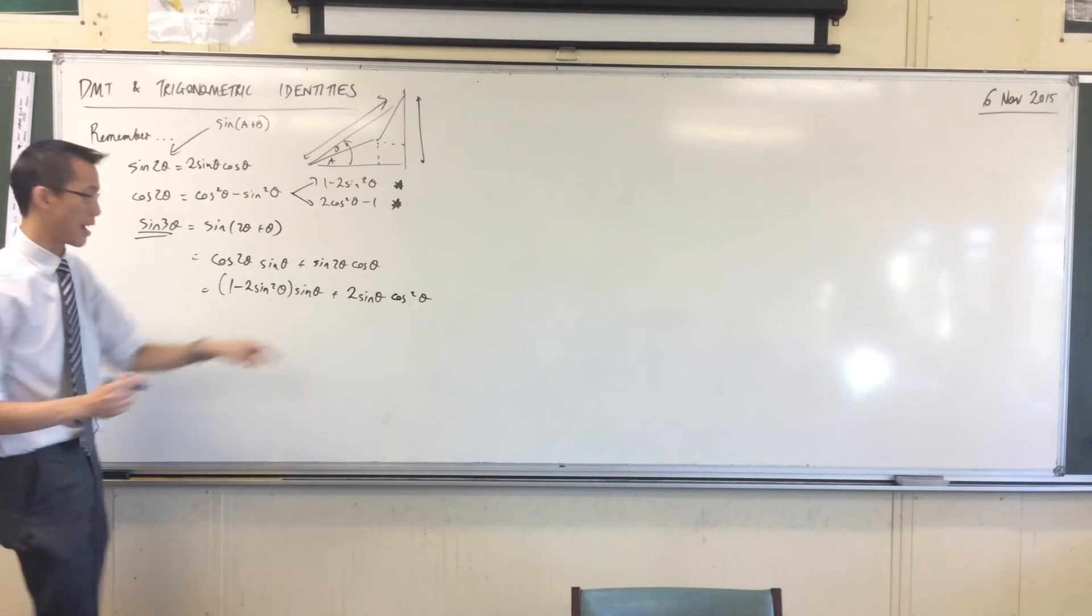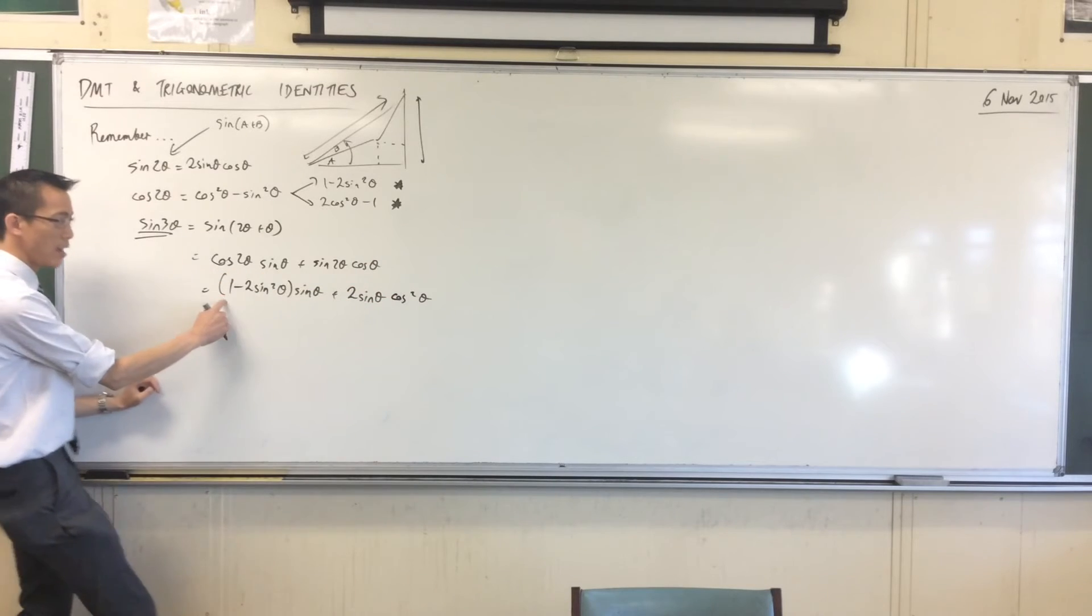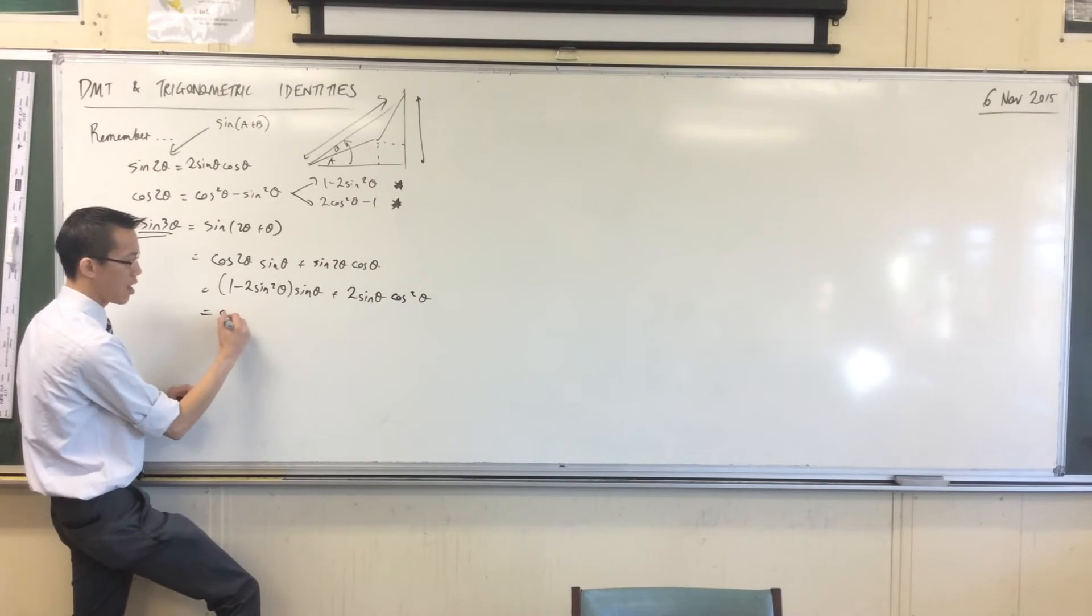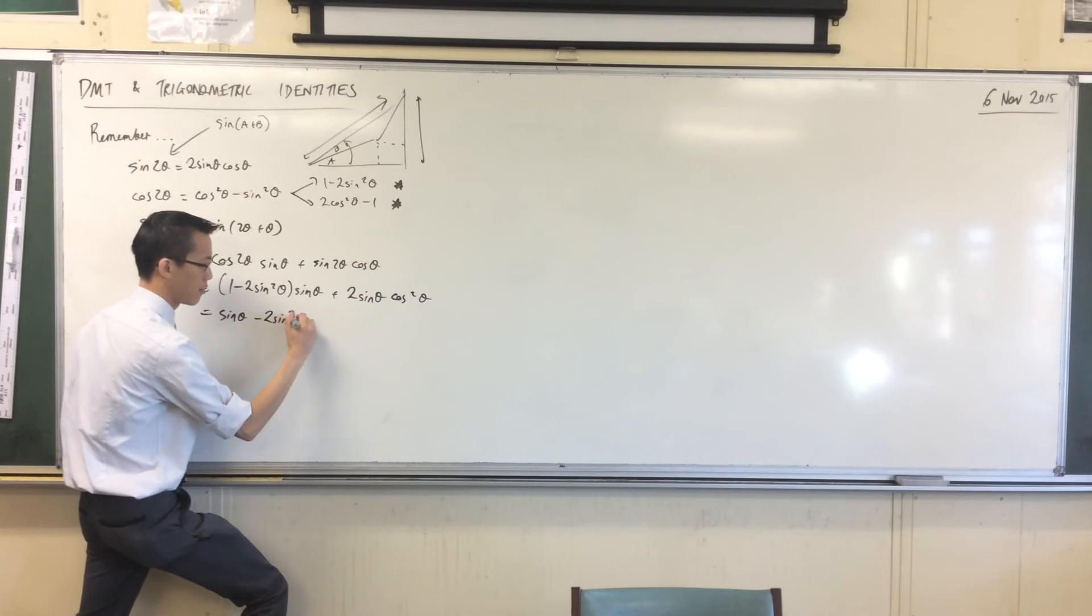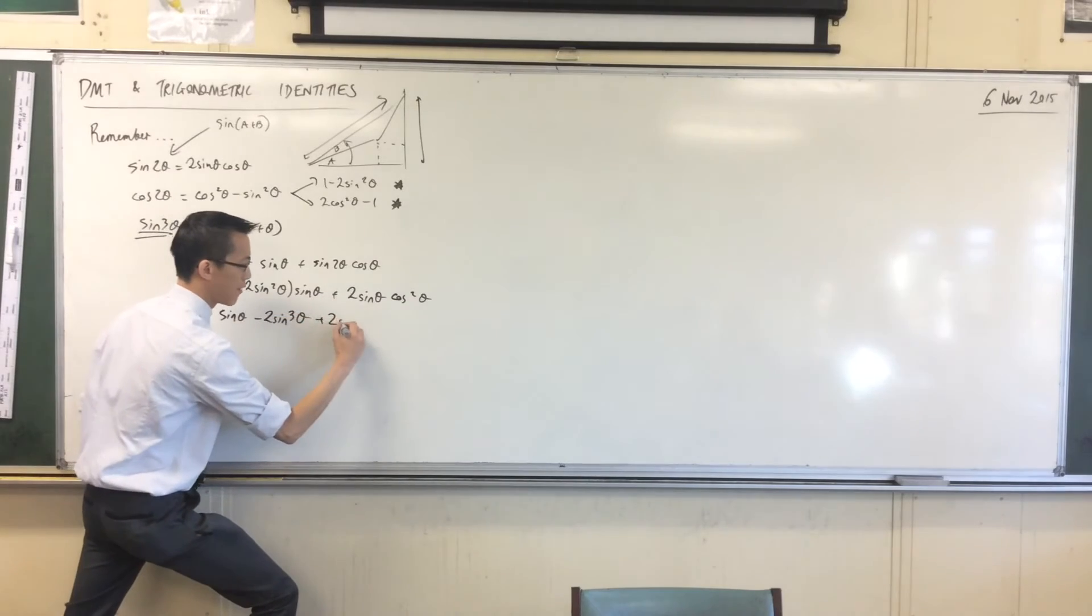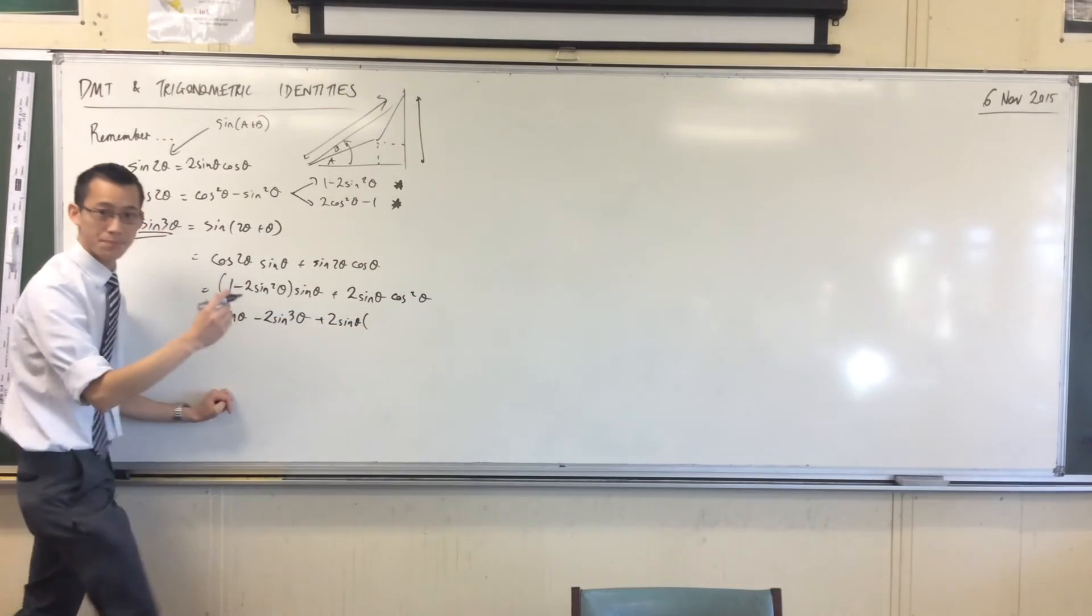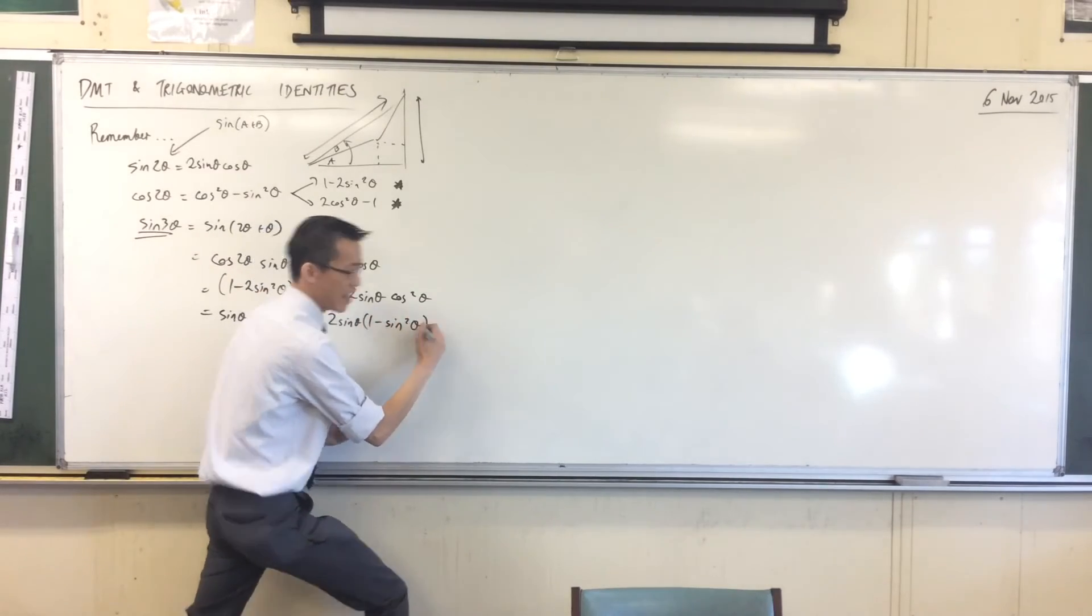Ah, now there's one more substitution that I can make, right? Let's expand this and then do that substitution. So here, I've got sine theta, take away 2 sine cubed. Okay, so far so good. Over here, I'm going to have 2 sine theta times what? 1 minus sine squared.